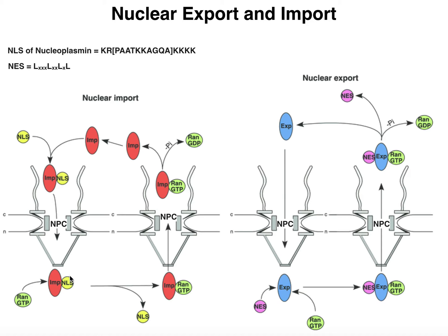Once this complex is in the nucleus, there's another protein called RAN. RAN is a G protein, which means it has to have bound GTP to function. When RAN binds to importin, that facilitates the displacement of the protein of interest — the transcription factor or DNA polymerase with the NLS dissociates and then functions inside the nucleus. The RAN-GTP is now bound to importin, and this facilitates the importin moving back out into the cytoplasm.